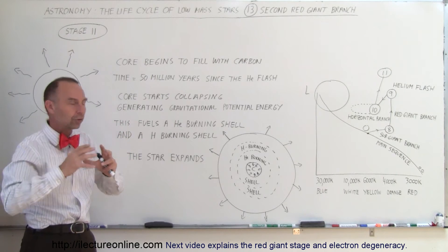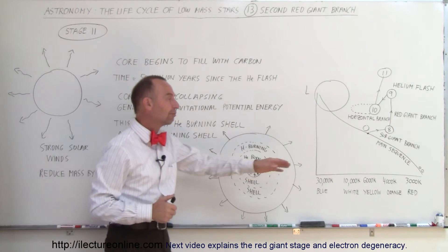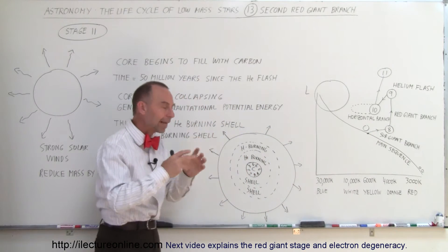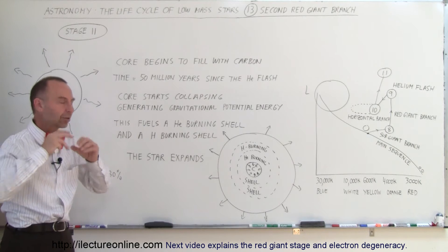Gravity begins to push the core closer and closer together into a more and more dense state, as it did before when it went from burning hydrogen to helium. This is a very similar process. Gravity again takes over and begins to collapse the core.